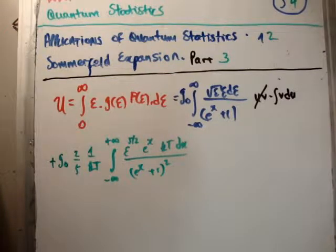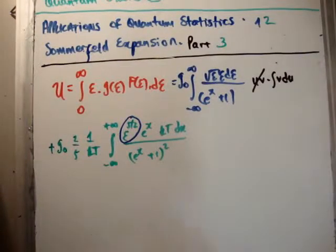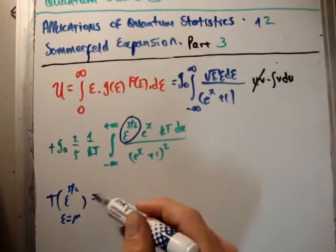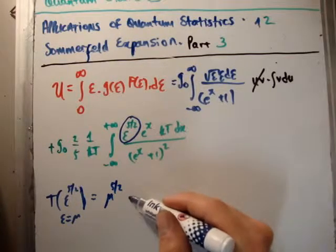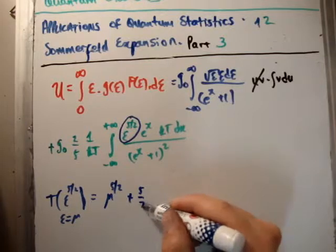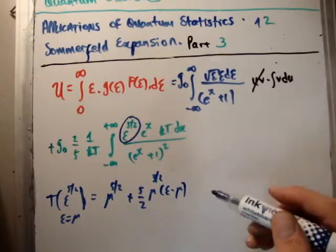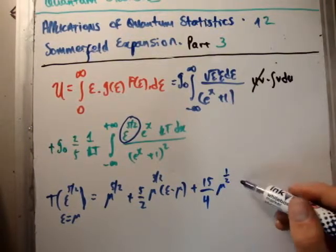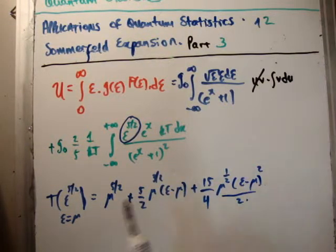Now, of course, we're talking about Sommerfeld expansions here. So we need to take the Taylor expansion of epsilon to the 5 over 2 around epsilon is equal to chemical potential. So T of epsilon to the 5 over 2 around epsilon is equal to mu. What is that? You can do it yourself. I'm just going to give you the answer. I've shown you in video number 52 how to do it anyway, but it will say this is the answer. Mu to the 3 over 2 epsilon minus mu plus 15 over 4 mu to the half epsilon minus mu squared over 2. So we're going to plug these three terms now into our integral. And what's that going to give us? It's going to give us three different integrals. This one, this one, and this one.